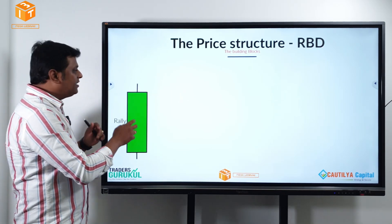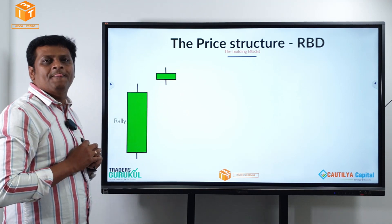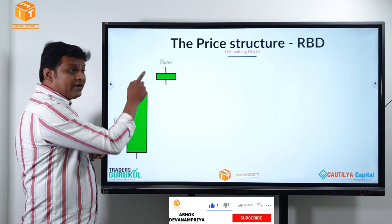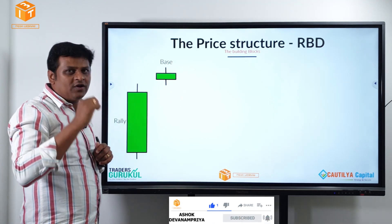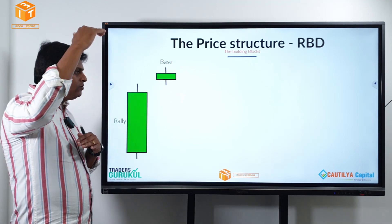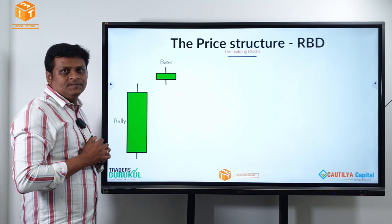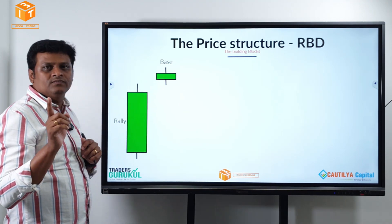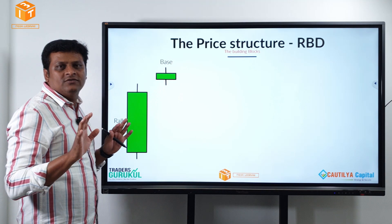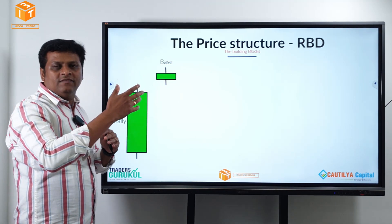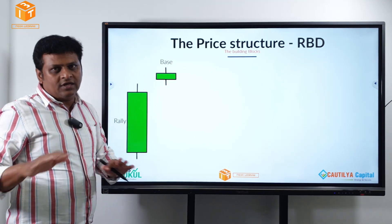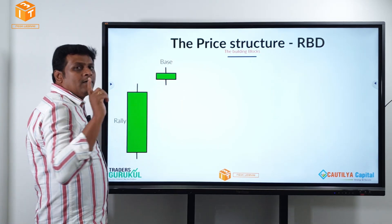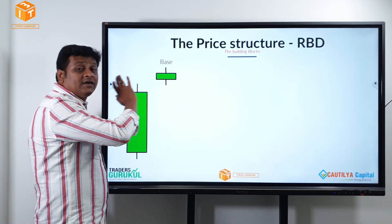It is a strong rally — buyers are in control. What next? You get a base. Why is it a base? The body is smaller compared to the overall range of the candle. Does the color matter? No. It is a draw — like a cricket match where it does not matter whether you score more runs or take more wickets. A draw is a draw. There is a tug of war between buyers and sellers and nobody controls it.